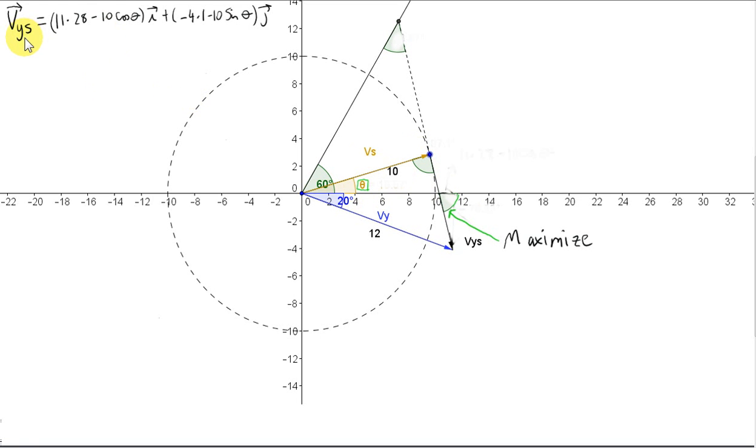In the last video we saw that the velocity of the yacht relative to the speedboat is given by this here. So here is Vs. Now, to find the value of theta that maximizes this angle here, we have to consider the components of vector Vs. Well, the horizontal component is 11.28 minus 10 cos theta. We know that that's positive. We explained that in the previous video.